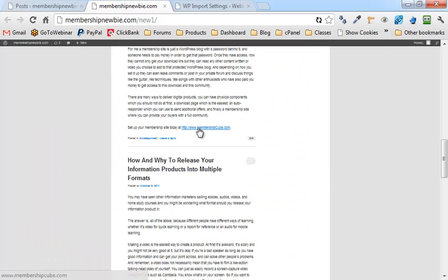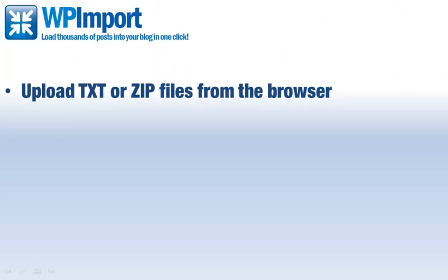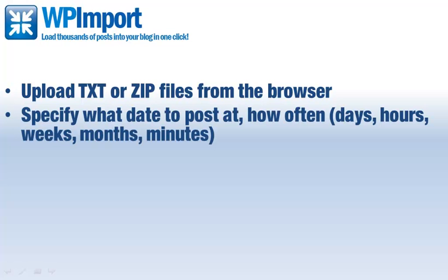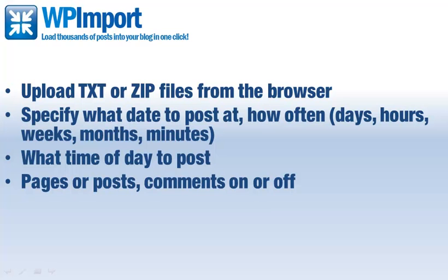The WP Import WordPress plugin allows you to upload text or zip files directly through your browser into your blog from your back end. You can specify what date to post, how often to post — so you can space your different posts out days, hours, weeks, months, or even minutes apart — and post them in the future, in the past, or in the present. You can also control what time of day you post.